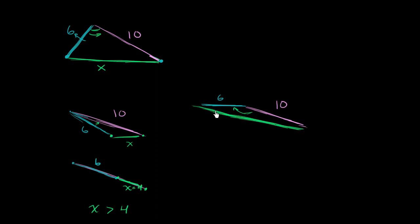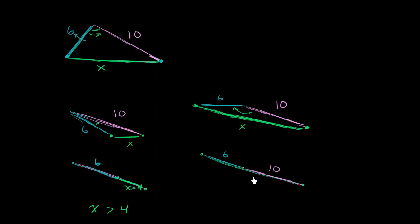So let me draw the side of length x. We're trying to maximize the distance between that point and that point. In the degenerate case at 180 degrees, the side of length 6 forms a straight line with the side of length 10 — this is how you can get those two points as far apart as possible. In that situation, x is going to be 6 plus 10, which is 16. If x is 16, we have a degenerate triangle, so if we want two dimensions, x has to be less than 16.